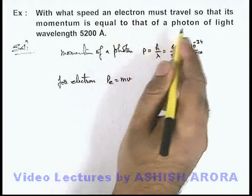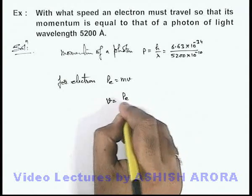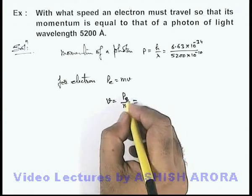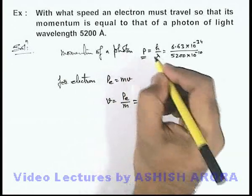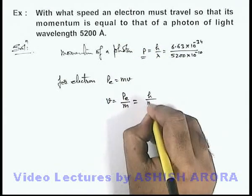At which its momentum is equal to that of a photon. So the speed we can see is momentum of electron by its mass. So momentum of electron must be equal to that of the photon as given in the problem, so here we can write it is h by m lambda.